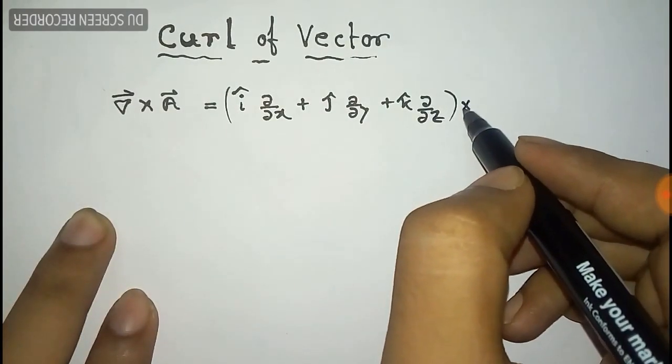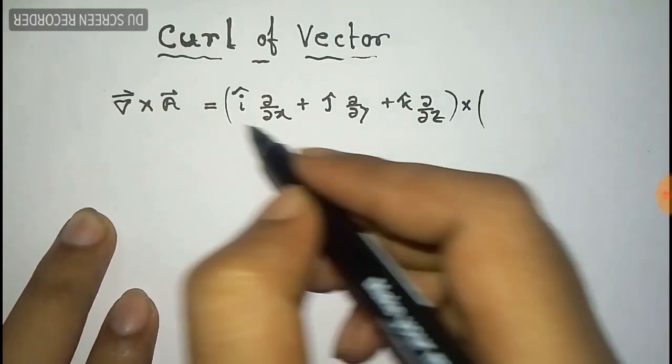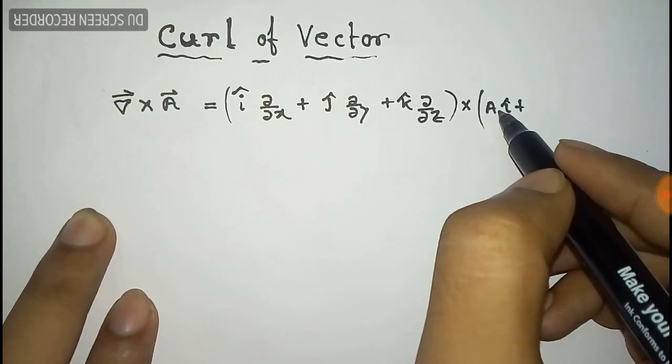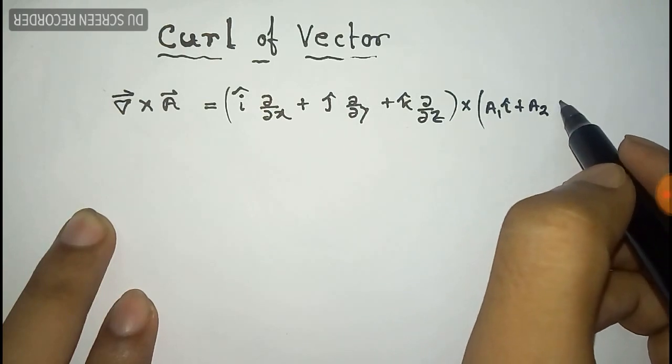That is the value of nabla, and the value of the vector A is given by a₁î plus a₂ĵ plus a₃k̂.